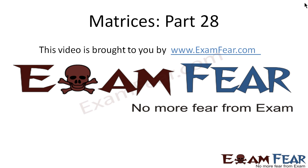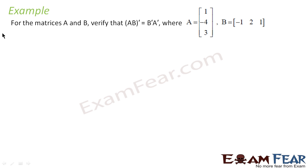Hello friends, this video on matrices part 28 is brought to you by examfear.com. Please make sure that you have watched part 1 to part 27. This is one example where I told about the property (AB)' = B'A'. We have to verify the same property using this example where A and B are given matrices. To do this, the first thing we have to do is find AB, then take the transpose, and then find B'A' and multiply.